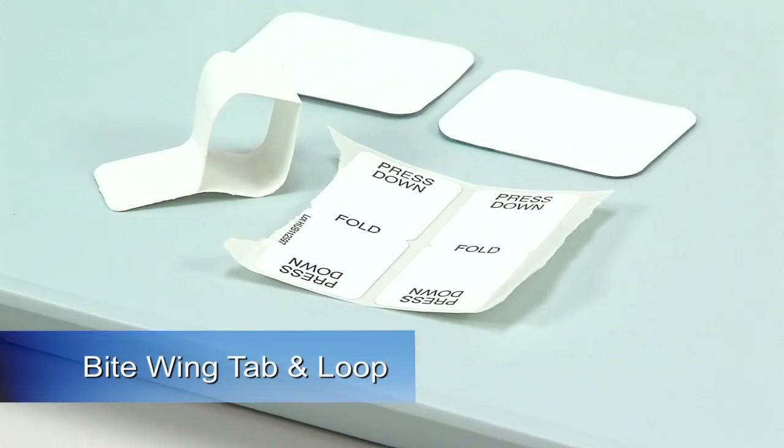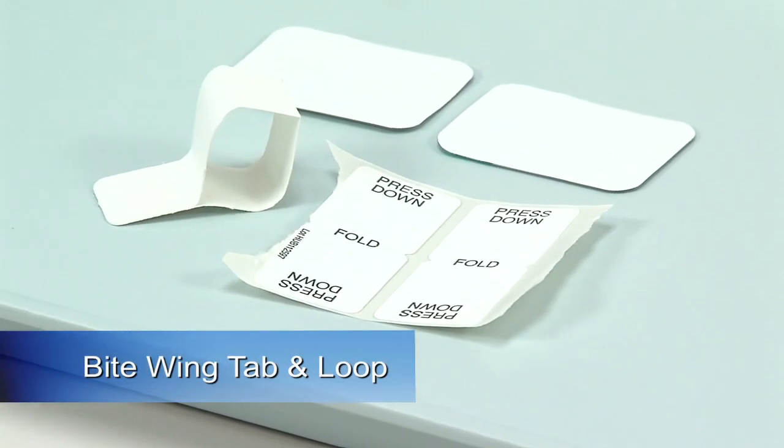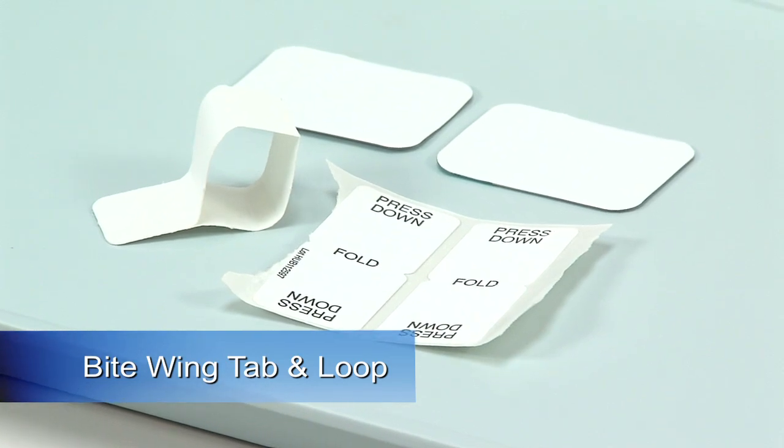Two common types of film holders specific to the bite wing projection are the bite wing tab and the bite wing loop.